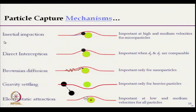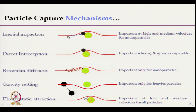This diagram shows inertial impaction. The red path shows the air or fluid path, and the black dot is the particle. Due to inertia, this particle does not follow the air stream and instead strikes the fiber and is deposited at that point.